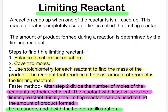Steps to find the limiting reactant. Number one: balance the chemical equation. Number two: convert to moles. Number three: use stoichiometry for each reactant to find the mass of the product. The reactant that produces the least amount of product is the limiting reactant.